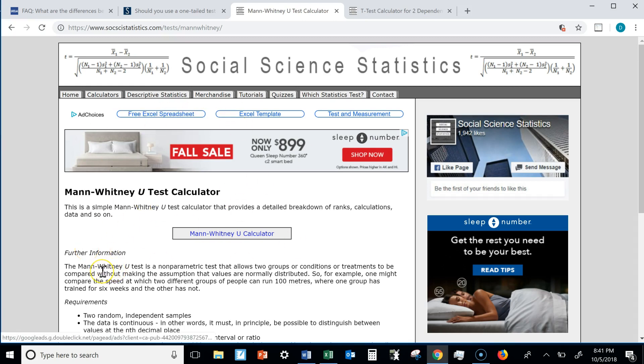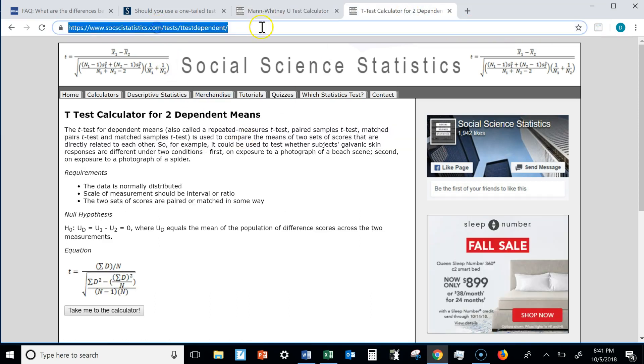This one is what you use for an unpaired test. You have two independent groups that you tested, men and women, Europeans-Americans. If you have one group that you tested twice, you would use, potentially, this online website. And you would click, take me to the calculator.